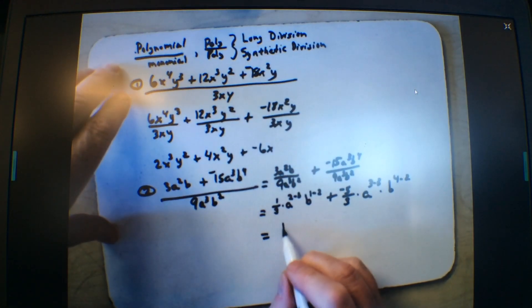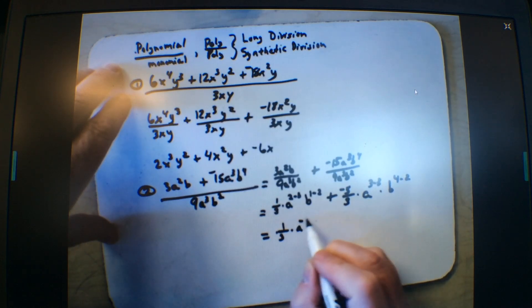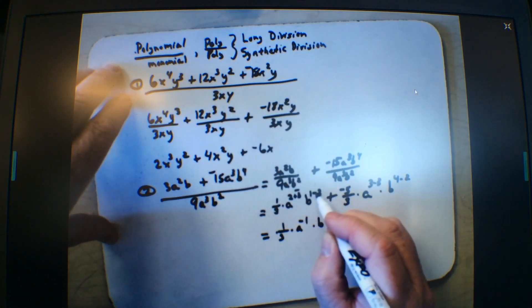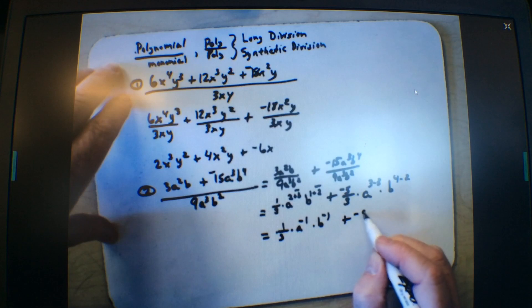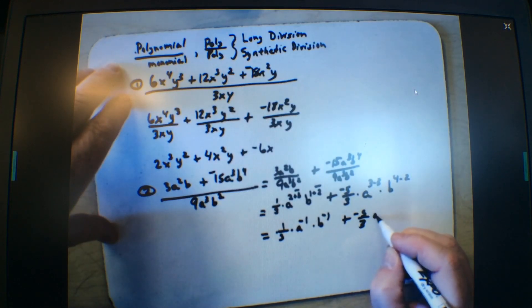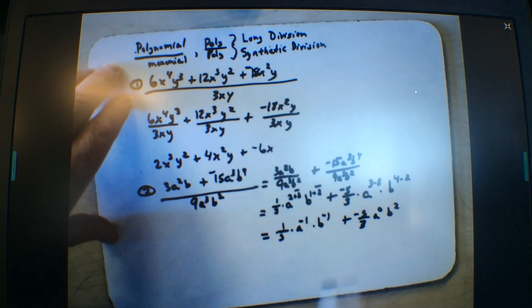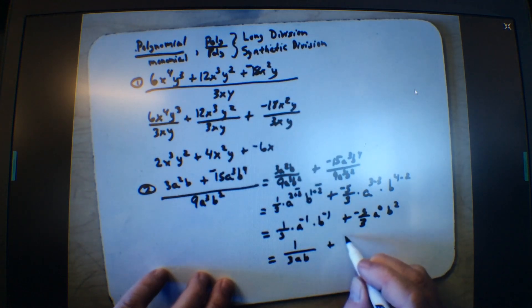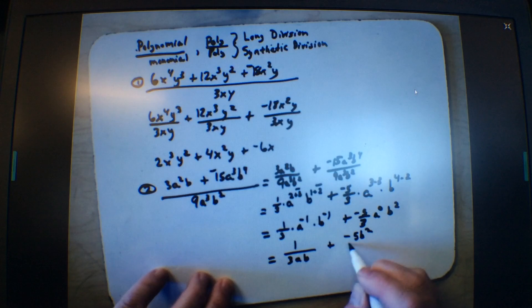So, what I end up getting is 1 3rd times a to the minus 1 times b to the minus 1, correct? When I change this to plus a negative, plus a negative, plus a negative, and then plus a negative 5 3rds, plus a to the 0, b to the 2nd, correct? So, I get 1 over 3ab, plus a negative 5b squared over 3.